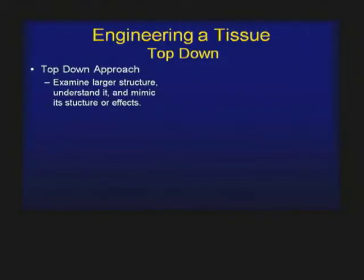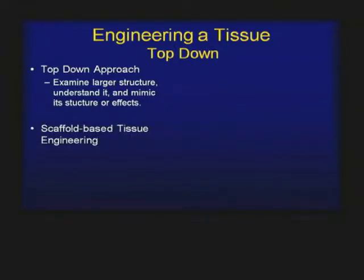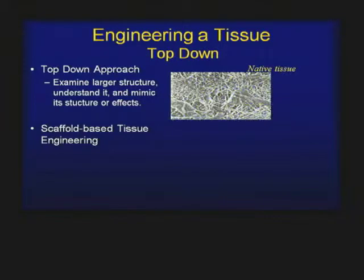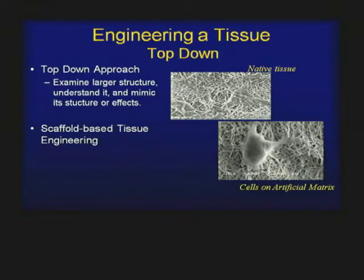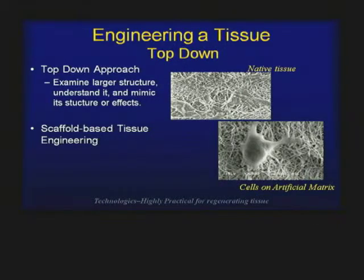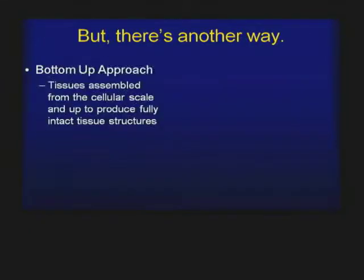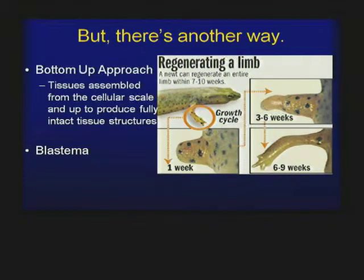The third area we're exploring is how we actually engineer tissues. The traditional way we think about it is a top-down approach: we examine larger structures, try to understand and mimic them. The classic way is scaffold-based tissue engineering, which is the backbone of how we engineer tissues. Our nanofiber matrix with cells actually looks like native tissue. But there's also a bottom-up approach — assembling tissues from the cellular scale to produce intact tissue structures. The example of that is the blastema: a newt can regenerate an entire limb within seven to ten weeks.